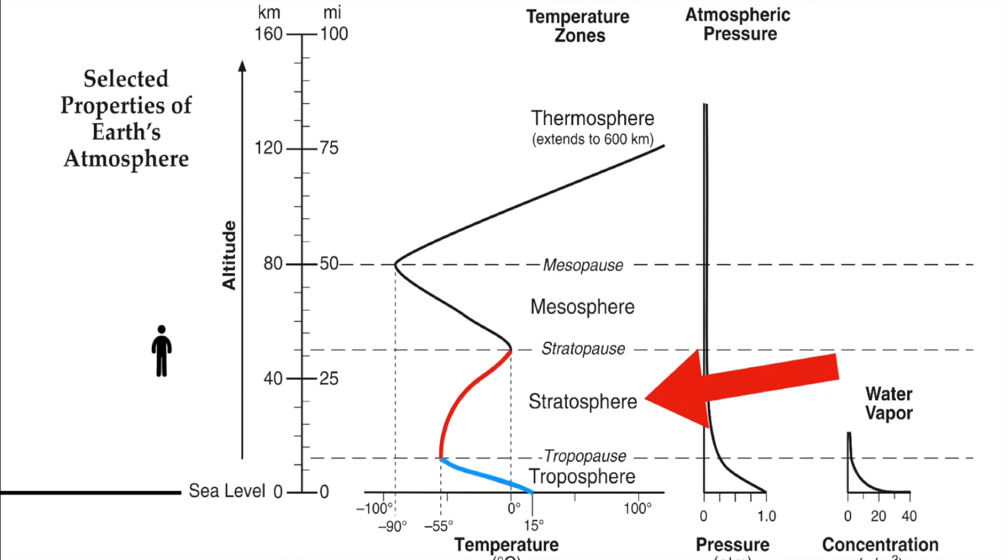Then you arrive at the stratopause and pass into the next layer, called the mesosphere. And in here, once again, it drops off. Temperature goes way down.